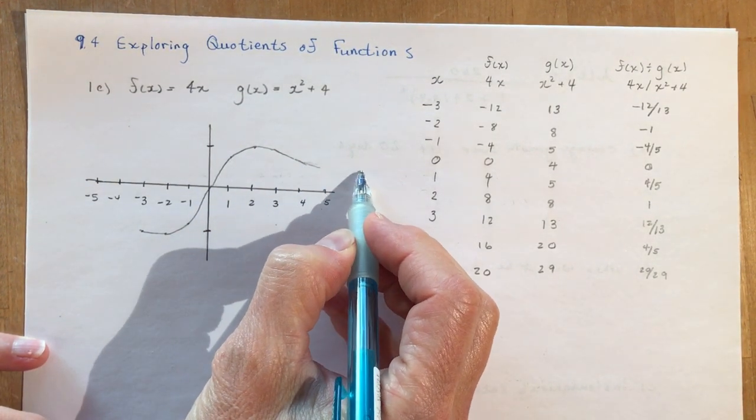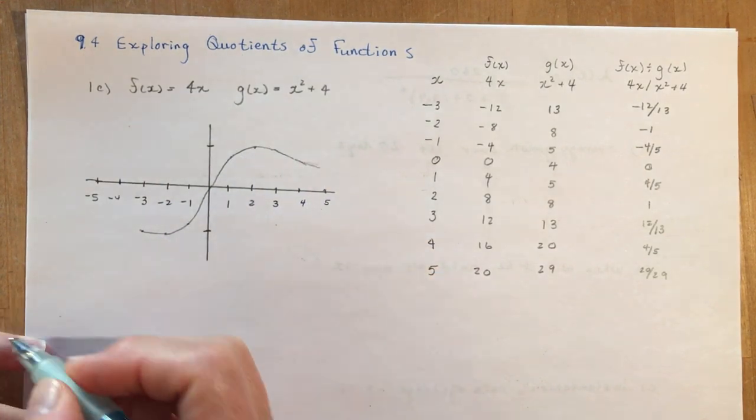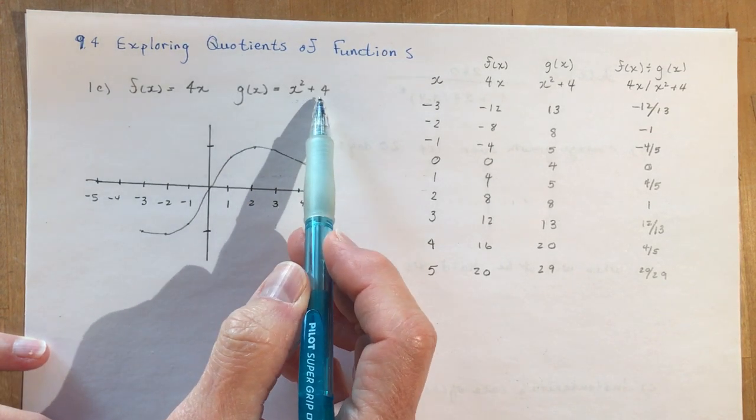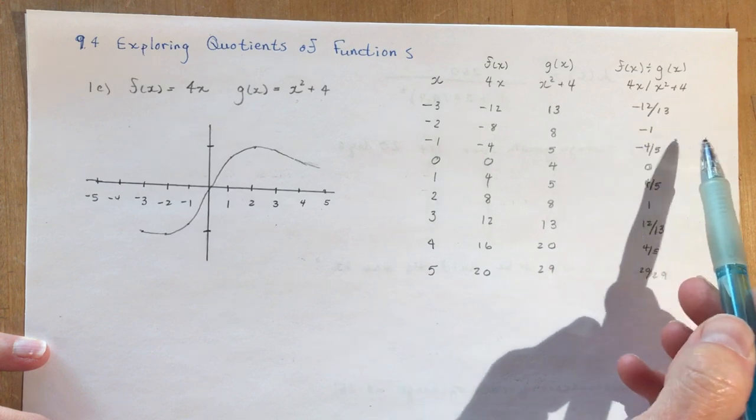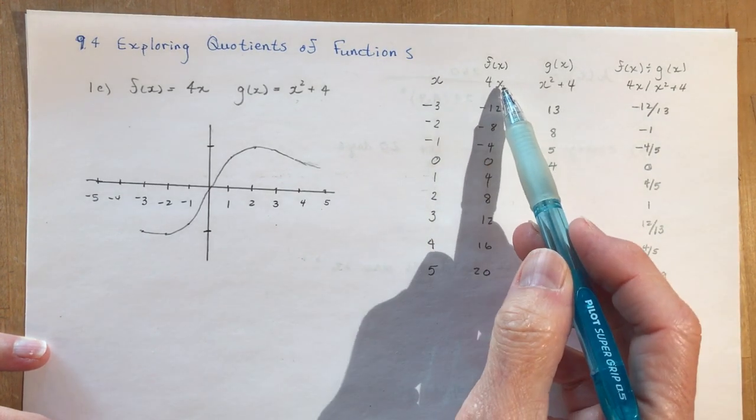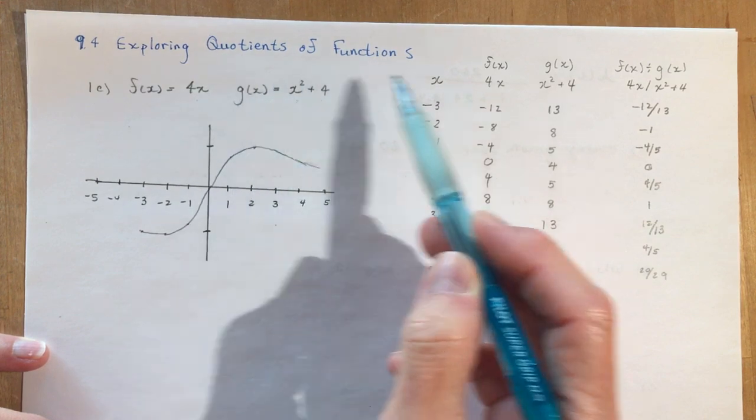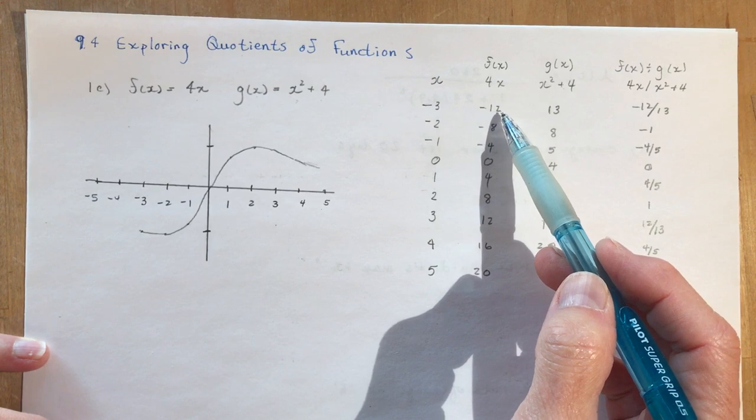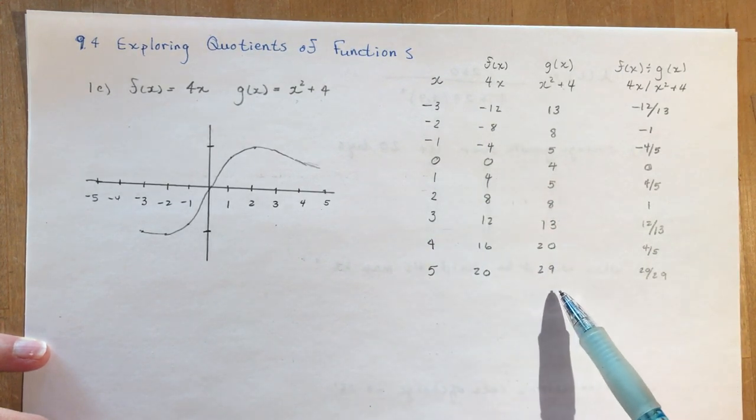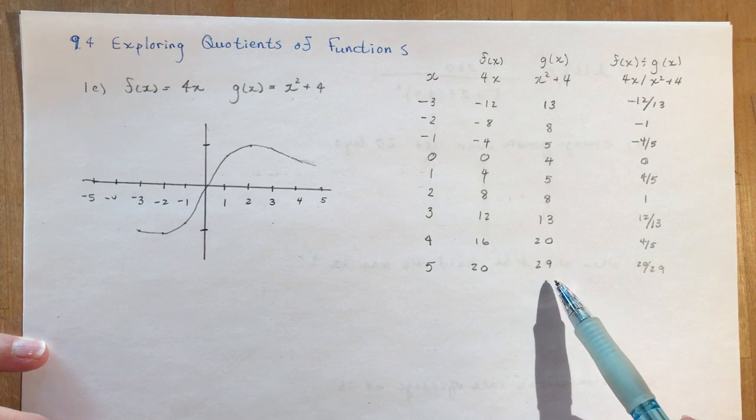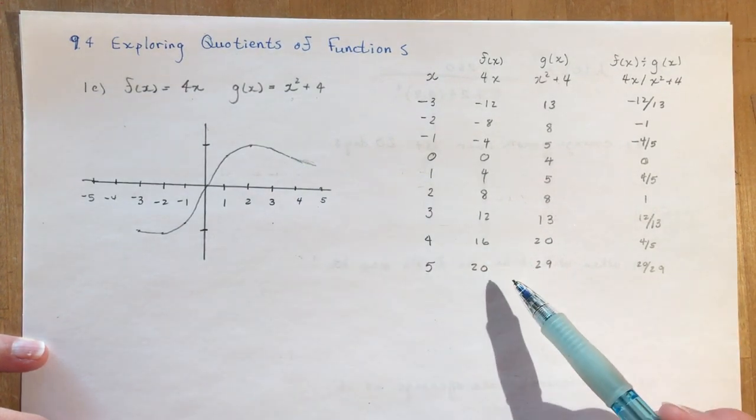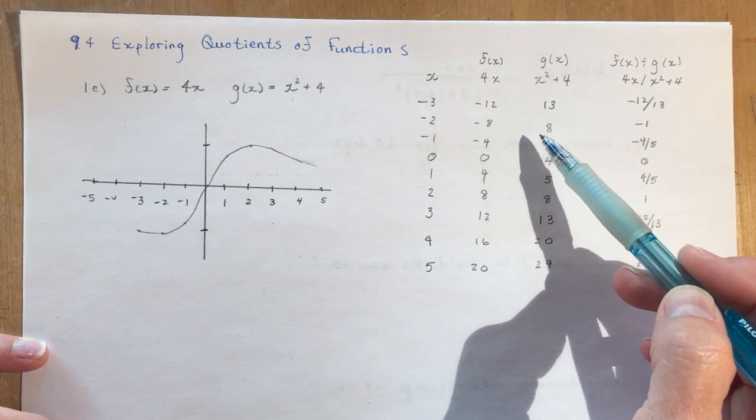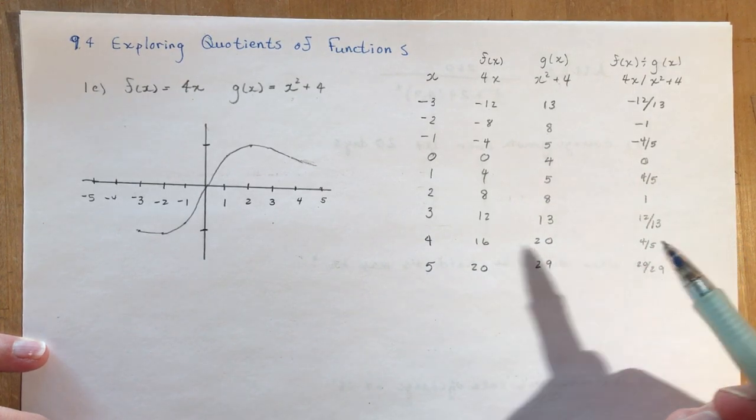I did 1c from your textbook: 4x divided by x squared plus 4. I made a little table with my x values, f(x) which is 4x, and g(x) which is x squared plus 4. I evaluated those for values between minus 3 and 3 initially, then I decided I would do a few extras here to see what was happening as we went out farther. Then all you do is you divide them.